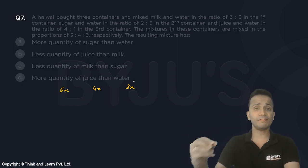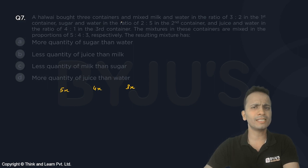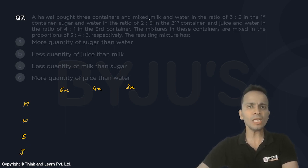Now we have four things here: milk, water, sugar, and juice. We'll be talking about each of these containers one by one.